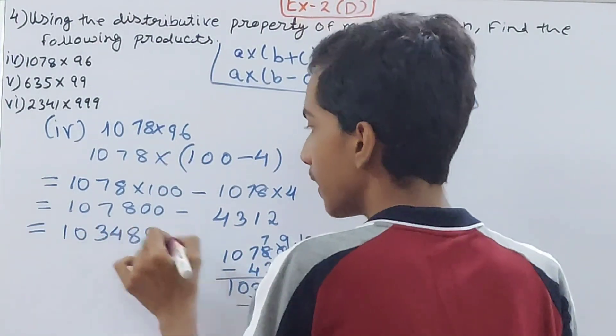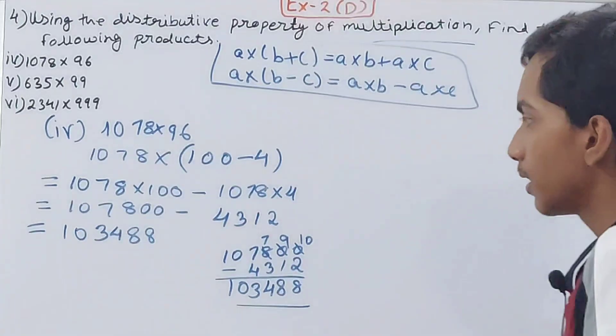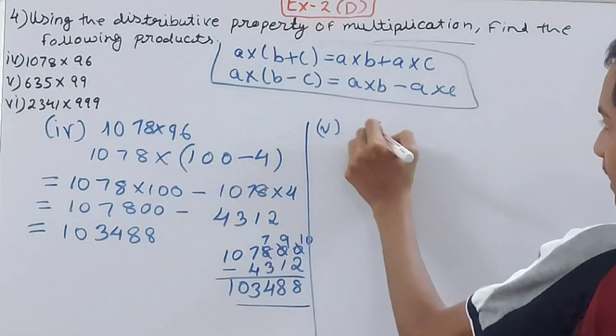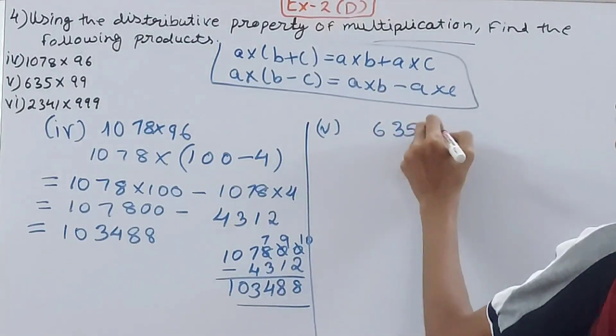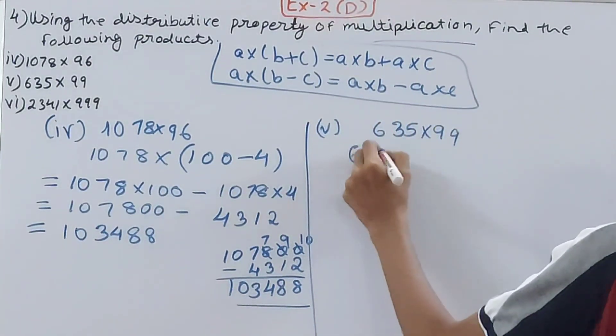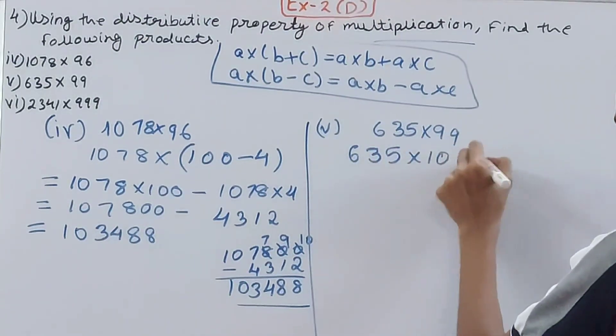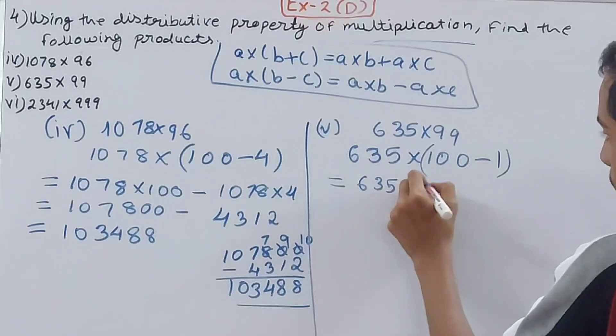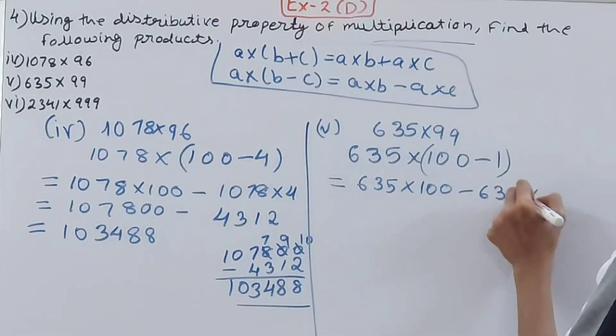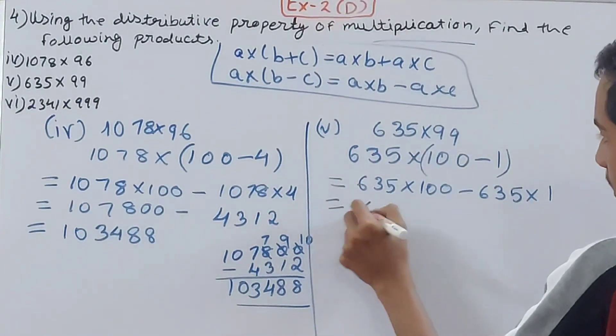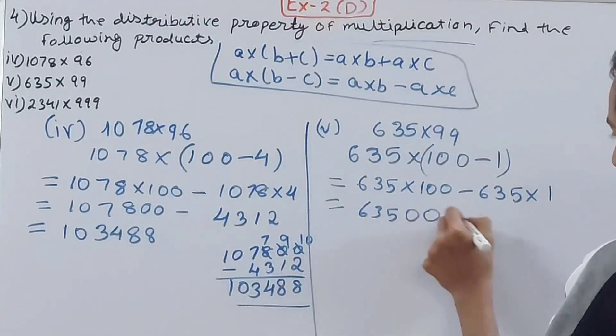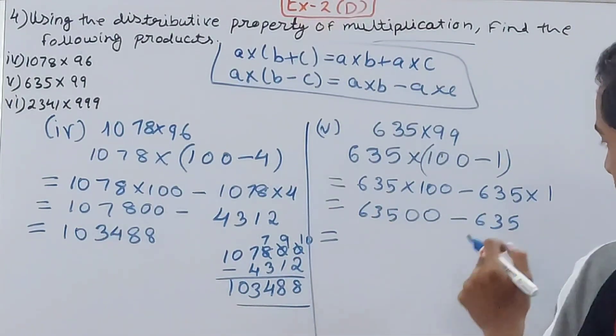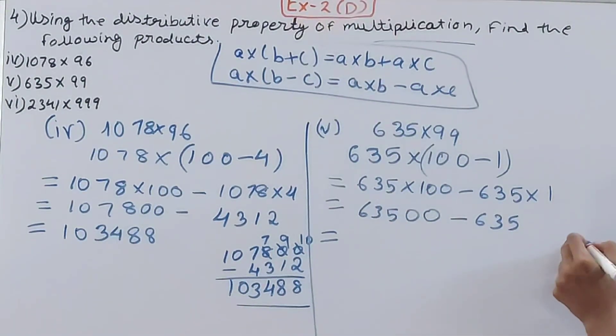The fifth part: 635 × 99. Same condition here, 635 × (100 - 1), which will be 635 × 100 minus 635 × 1. That's 63,500 minus 635, which equals 62,865.